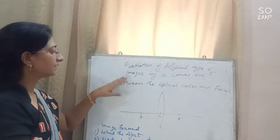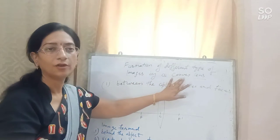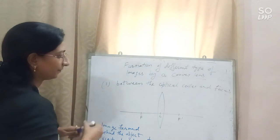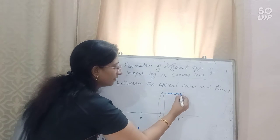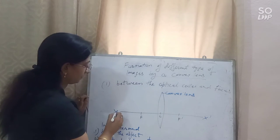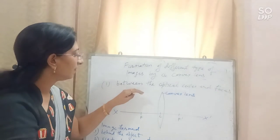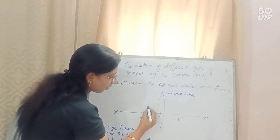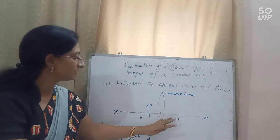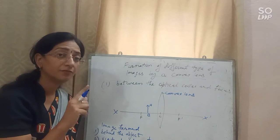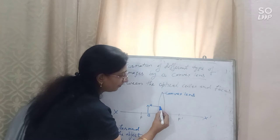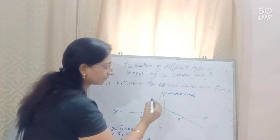Now consider the different cases of image formation by a convex lens. The first case is when the object is placed between the optical center and the focus. We draw the convex lens with its optical center and principal axis. The object AB is placed between the optical center and the focus. Applying rule one, a ray of light parallel to the principal axis will pass through the focus.